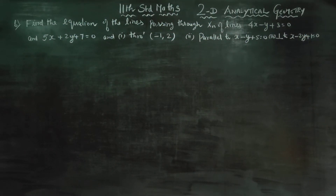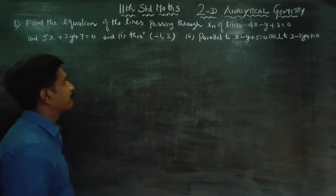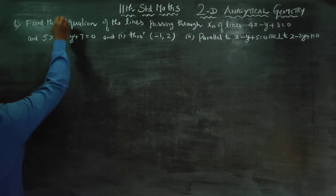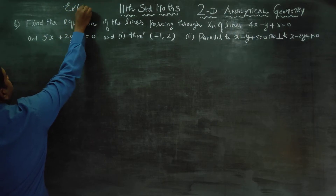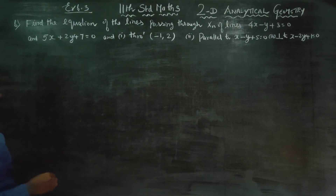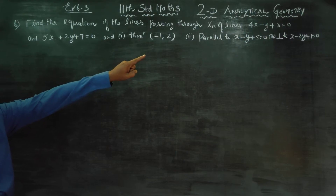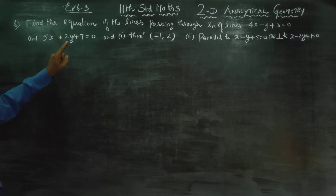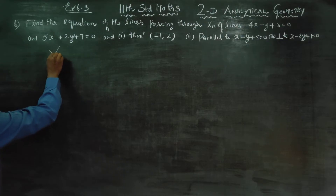Dear 11th standard students, in exercise number 6.3, sum number 6, find the equation of the lines passing through the intersection of the lines. When two lines intersect at a point, we will find a straight line.